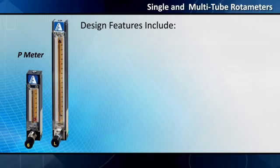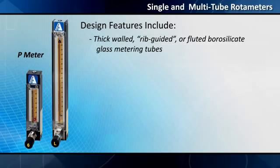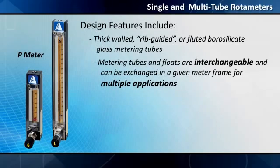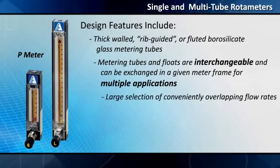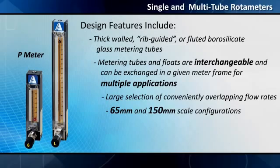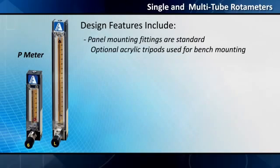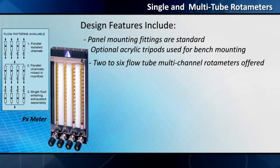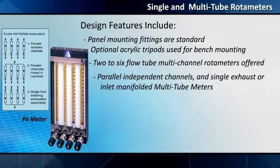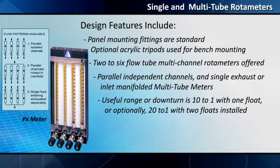Design features include thick-walled, rib-guided, or fluted borosilicate glass metering tubes. Metering tubes and floats are interchangeable and can be exchanged in a given meter frame for multiple applications. Large selection of conveniently overlapping flow rates. 65 mm and 150 mm scale configurations. Extensive list of available direct reading scales for many different fluids. Panel mounting fittings are standard. Optional acrylic tripods used for bench mounting. 2 to 6 flow tube multi-channel rotometers offered, with parallel independent channels and single exhaust or inlet manifolded multi-tube meters. Useful range or turndown is 10 to 1 with one float, or optionally 20 to 1 with two floats installed.